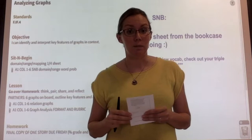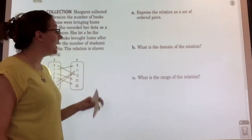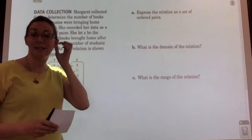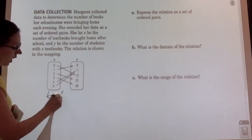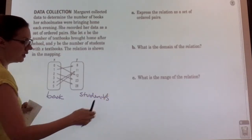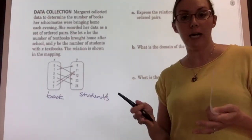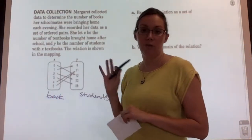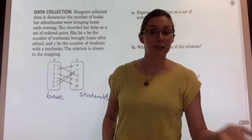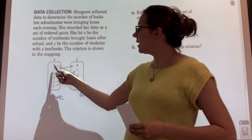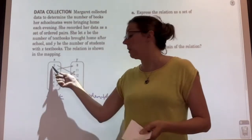Let's start by going over our sit and begin. The problem is about Margaret, who has collected data about how many textbooks students take home. The x's represent the number of books taken home each night and the y represents how many students are taking home those books. This is called a mapping, and a mapping shows you a relationship between your domain — the x values — and your range — the y values. Each arrow represents a separate coordinate pair, showing which x's are matched with which y's.